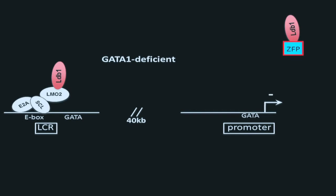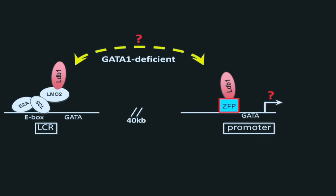So, we asked whether artificial tethering of LDB1 to the beta-globin promoter would rescue the looped chromatin conformation and activate transcription. In collaboration with Sangamo Biosciences, we produced artificial zinc finger proteins targeting a predetermined DNA sequence at the beta-globin promoter and fused them to LDB1.